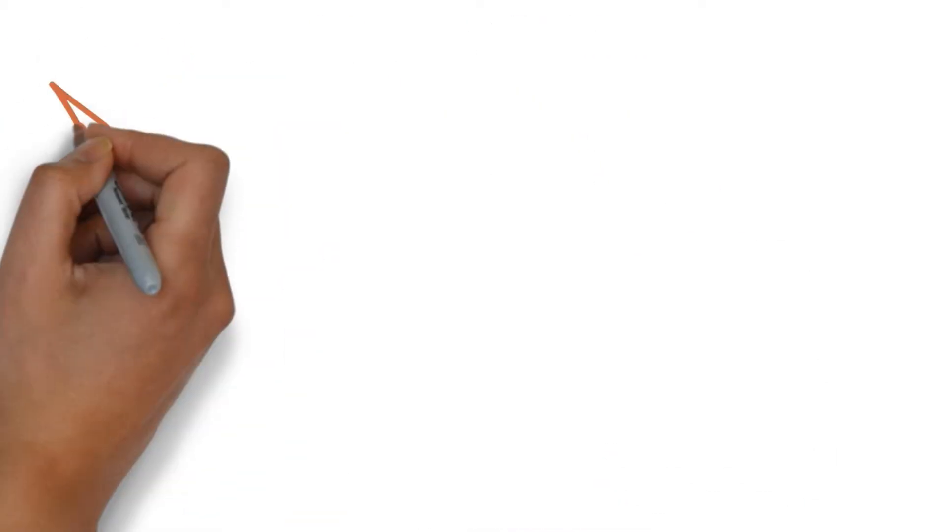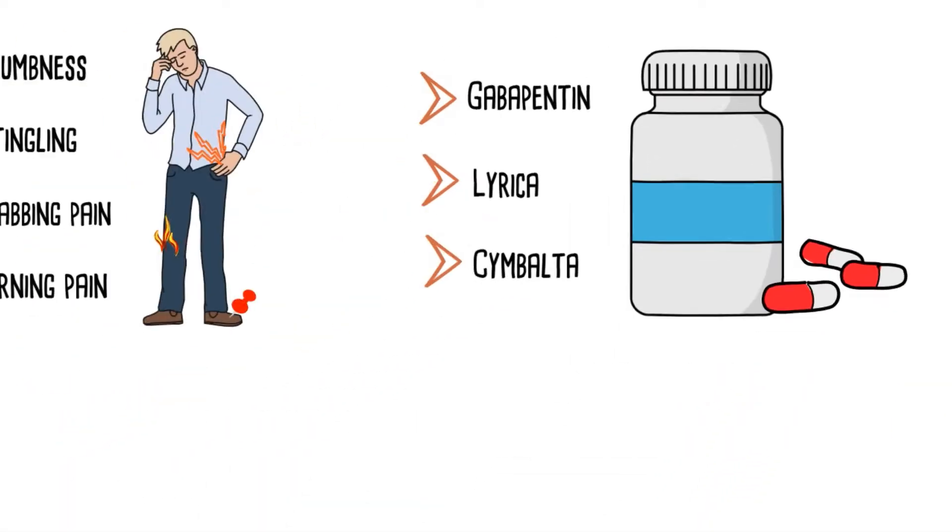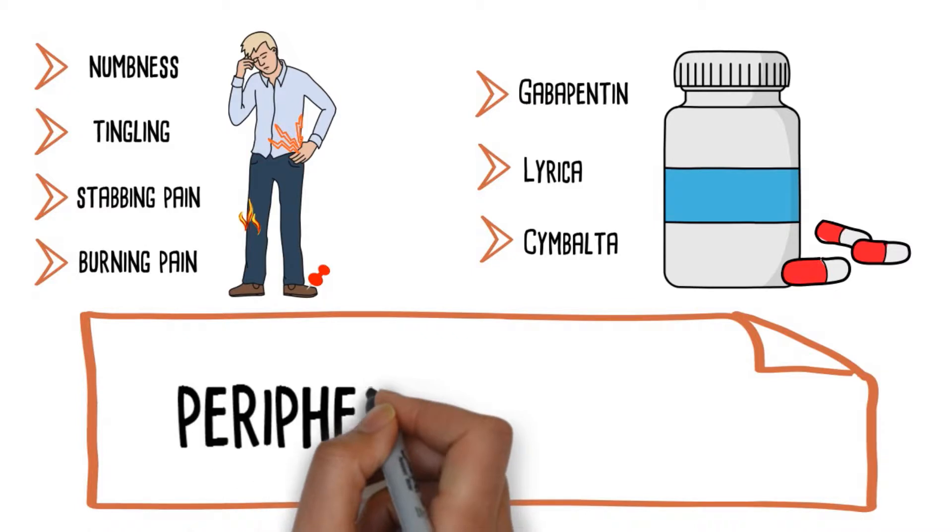Have you been prescribed gabapentin, lyrica, or cymbalta? If you can say yes to any of these, then you may have peripheral neuropathy.